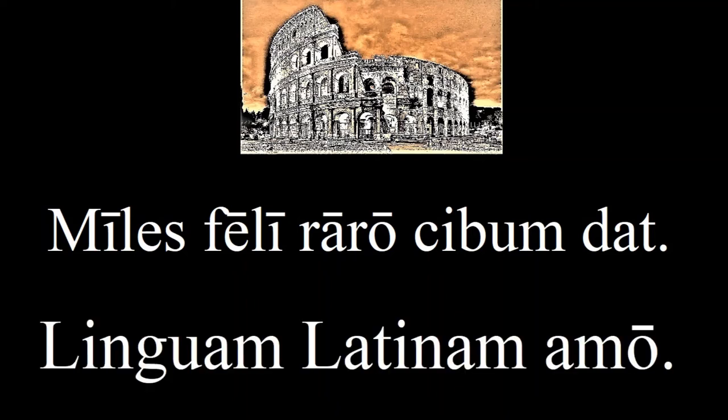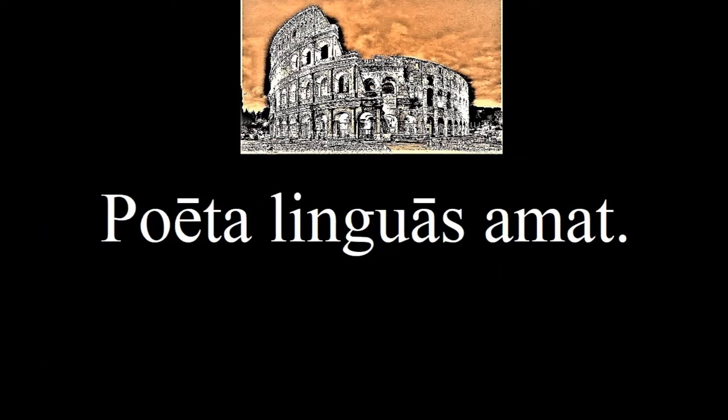To understand the next sentence, recall that when you are enamored, you are in love. 'Linguam latinam amo' — I love the Latin language, or just Latin. And you understand 'lingua,' right? We use this word in 'bilingual' and 'lingua franca.' Let's make it plural now: 'Poeta linguas amat' — the poet loves languages. Pretty convenient that the plural involves an S. Note also that the 'a' became long, because the nominative case is just 'lingua.'